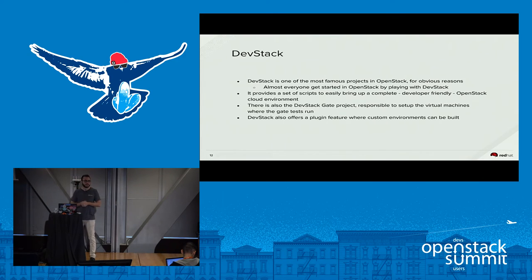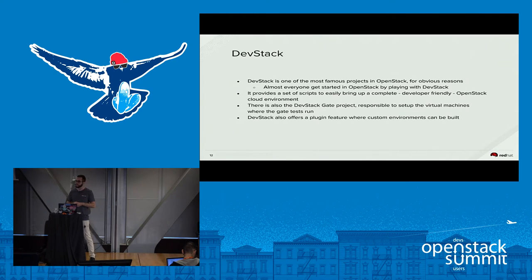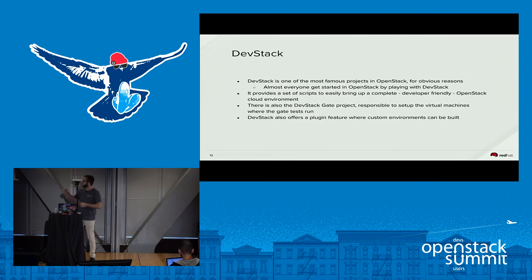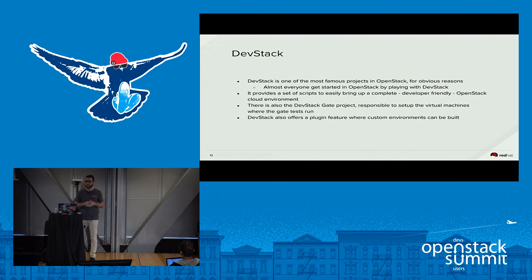DevStack is probably what everyone starts with when playing with OpenStack. It provides a set of scripts that create a cloud environment for development, and it's basically the project that runs in the VMs in the OpenStack gate. We also have the Nodepool project, which is responsible for setting up VMs and everything else for the CI. The DevStack plugin is a tool DevStack provides for when you need a customized environment that can't join the DevStack tree itself.